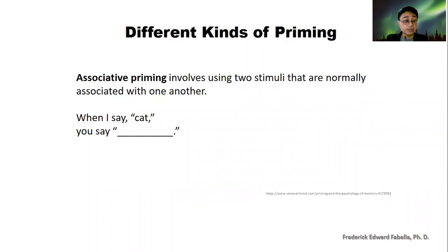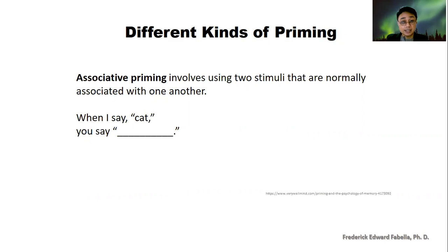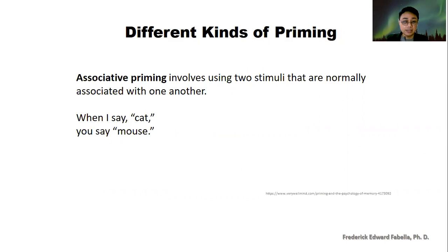Another type of priming is called associative priming. It involves using two stimuli that are normally associated with one another, such as when I say cat, you might say mouse — cat and mouse.